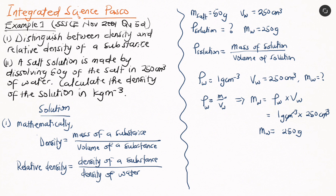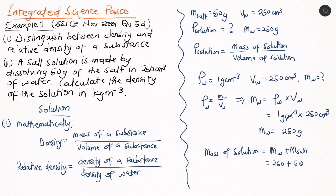Now that we have the mass of water, let's find the mass of the solution. The mass of the solution equals the mass of water plus the mass of salt: 250 grams plus 50 grams gives a total of 300 grams. Converting to kilograms, we multiply by 10⁻³, so the mass of the solution is 300 × 10⁻³ kg.